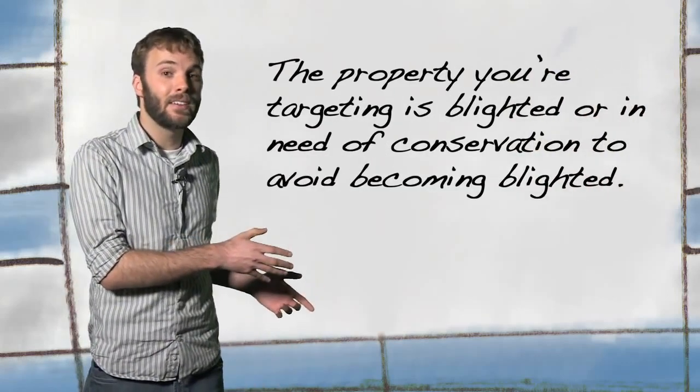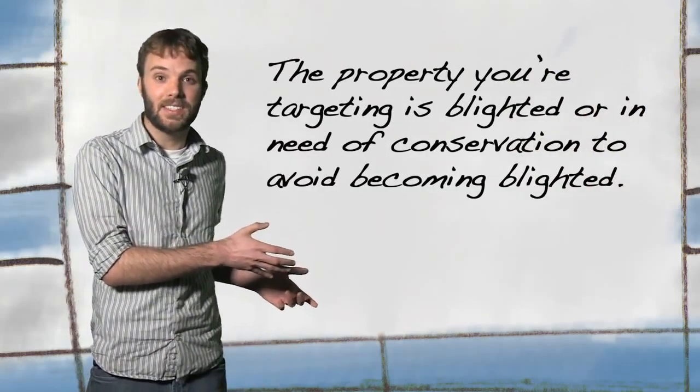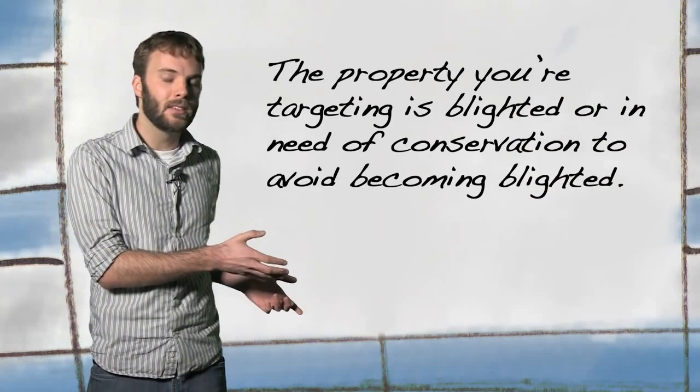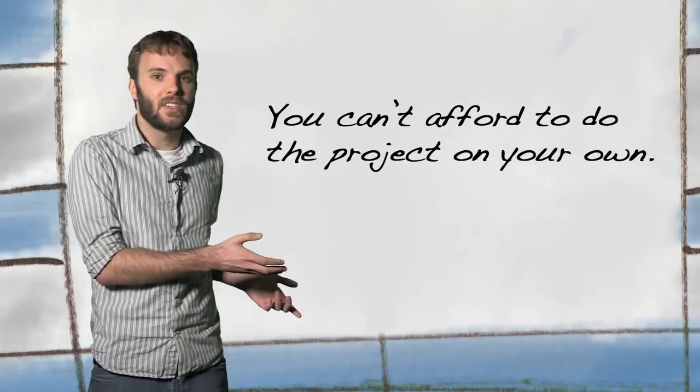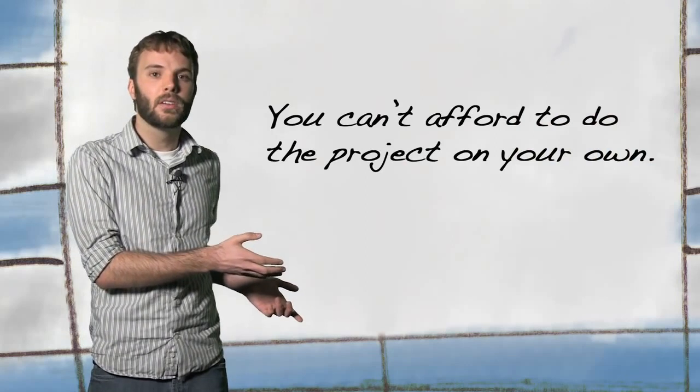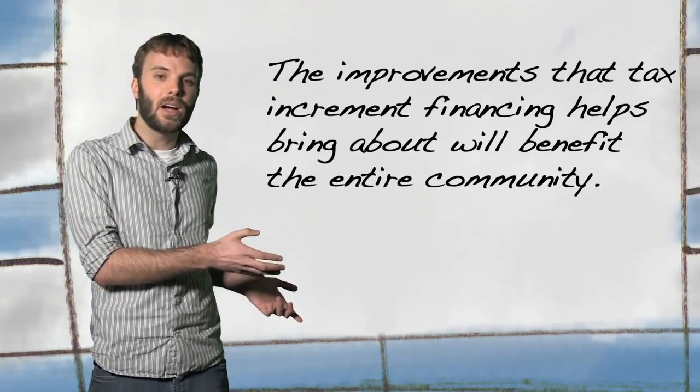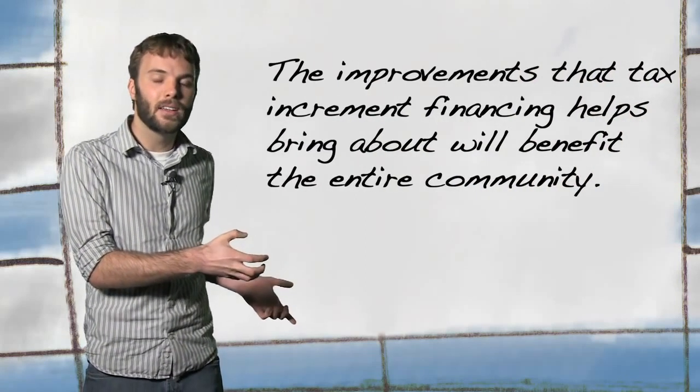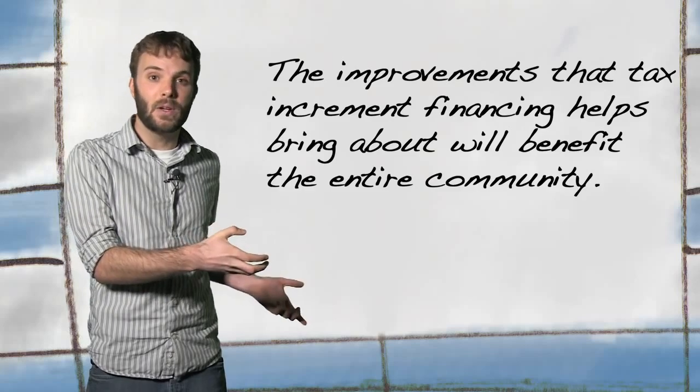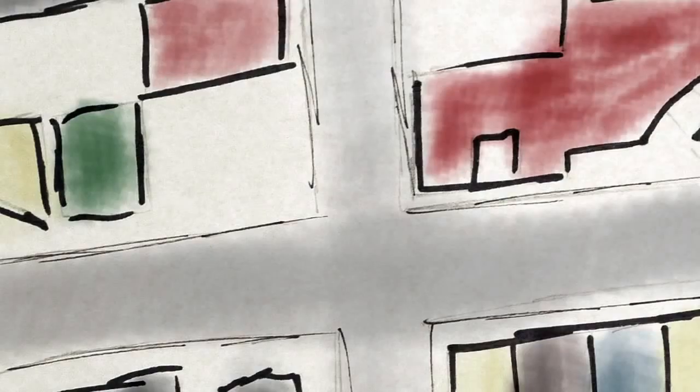But how do you make that happen? Well, the developer needs to prove to the city and the tax increment financing commission three things. One, that the area is blighted, or that conservation is needed to keep the area from becoming blighted. Two, that you can't afford the development on your own. And three, that the project you're seeking to create is going to benefit the entire community. If the eleven member commission approves your project,